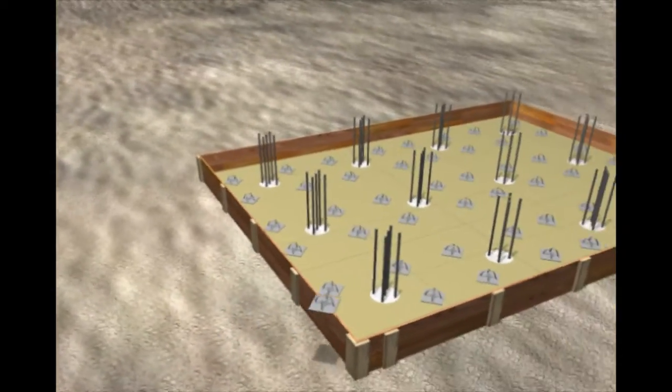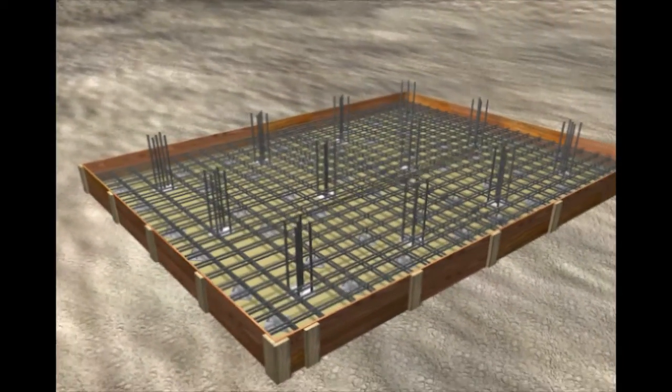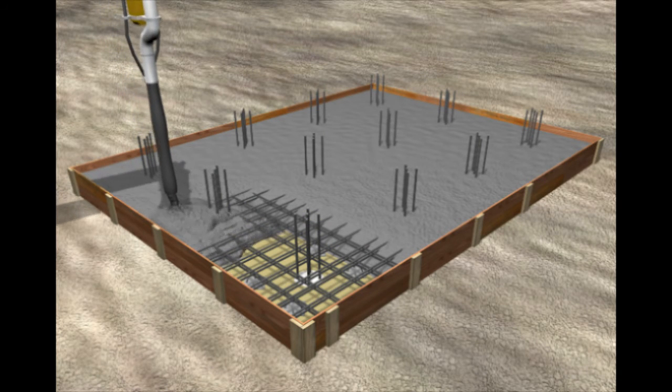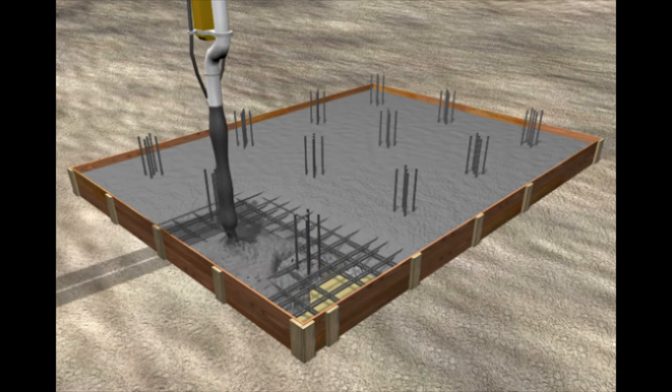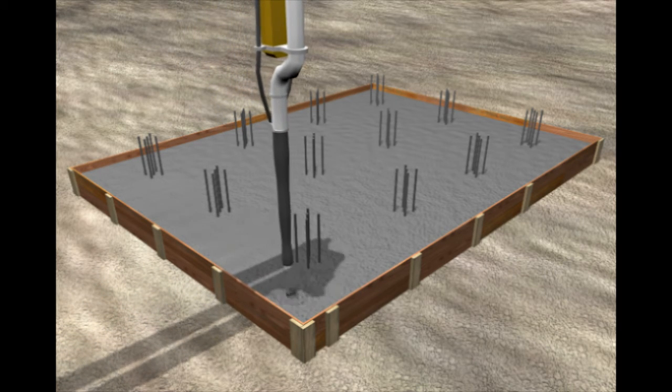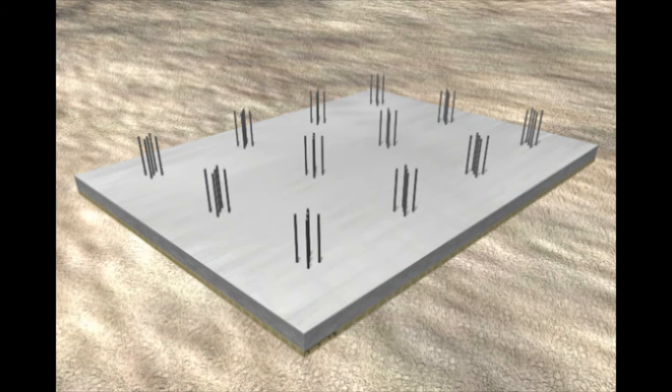Rebar supports or bolsters are used in the preferred structural slab method for the spacing and placement of rebar. The specified type of concrete slump and strength of concrete is commonly placed by the use of a concrete pump, which ensures a better result than hand-pouring the total project from a ready-mix concrete truck. After the concrete is poured, finished, and the slab is set, the perimeter forms are removed.